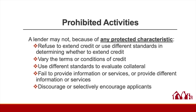The fair lending laws say essentially that a lender cannot treat any person differently because of their protected characteristics, and that treatment can come in many subtle and not-so-subtle forms. The most obvious differential treatment includes refusing to extend credit or applying different standards in determining whether to extend credit — for example, using a different credit score requirement or a different standard for proving income. Or varying the terms or conditions of credit, which could include the loan amount, interest rate, duration, type of loan, fees, down payment, or closing cost requirements.